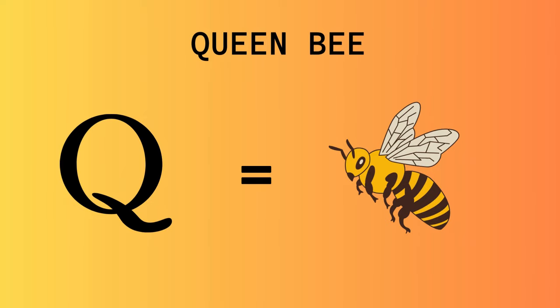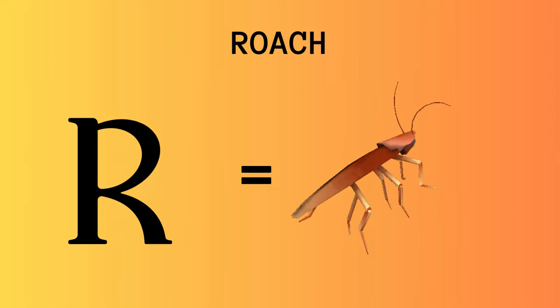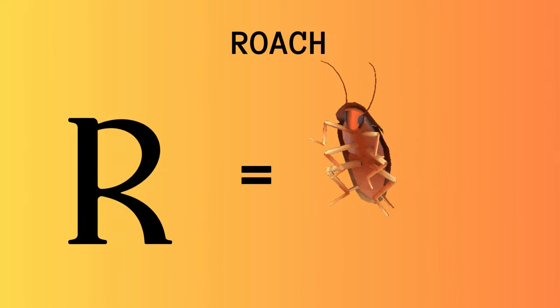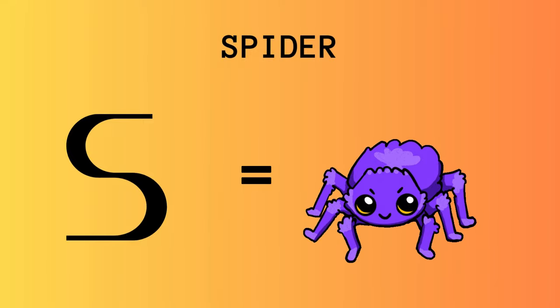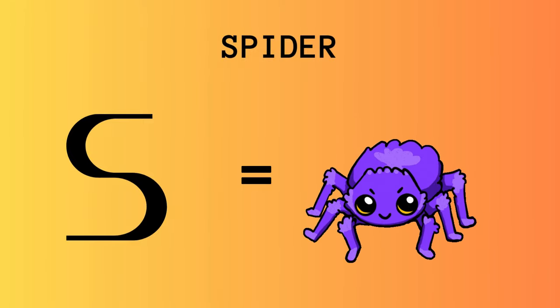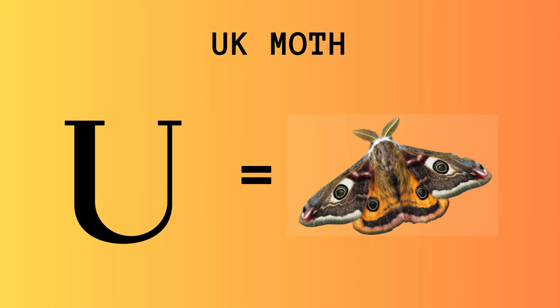Q for Queen Bee. R for Roach. S for Spider. T for True Bug. U for UK Moth.